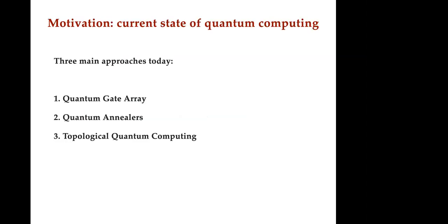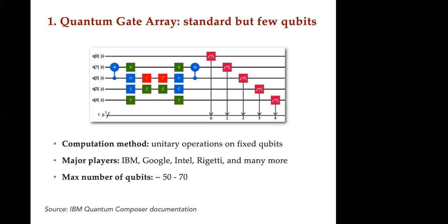In my mind there are three big buckets for quantum computing. One is the quantum gate array — this is probably the most popular approach today; IBM, Google, Intel, Rigetti and many more are pursuing this. The maximum number of qubits today is around 50 to 70, and you need several orders of magnitude more to build an ideal quantum computer.